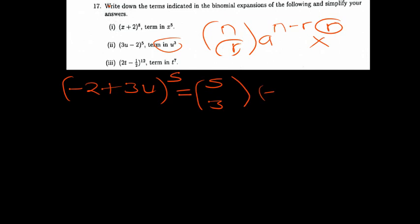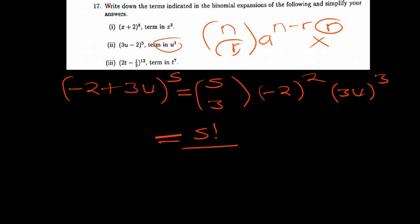So we have 5 choose 3, then a is negative 2 raised to the power of 5 minus 3, which is 2, multiplied by 3u raised to the power of 3. Negative 2 squared is 4, and 3 to the power of 3 is 27, since 3 times 3 is 9 times 3 is 27. So we have 5 choose 3 times 4 times 27 times u to the power 3.